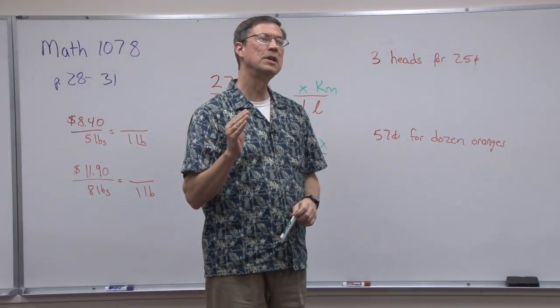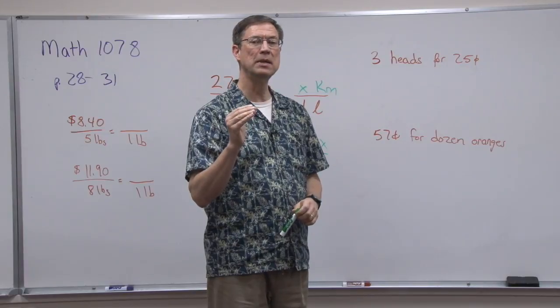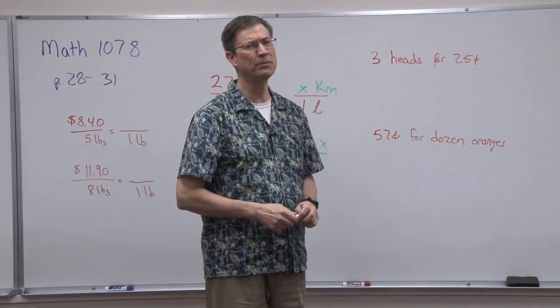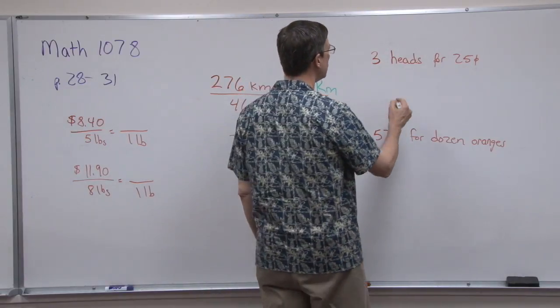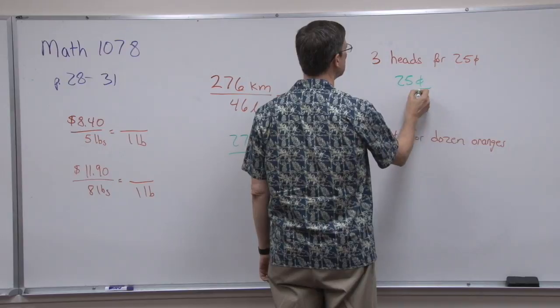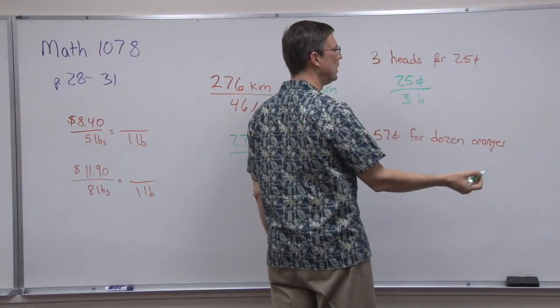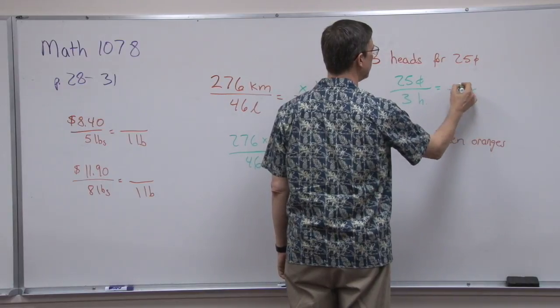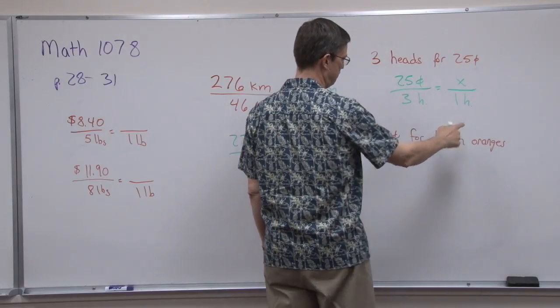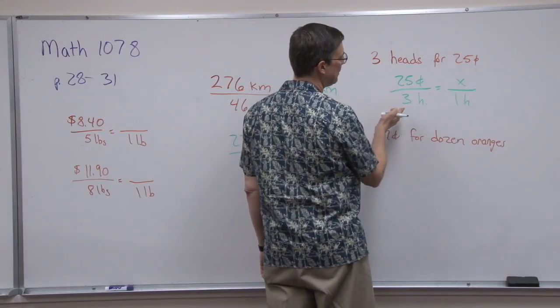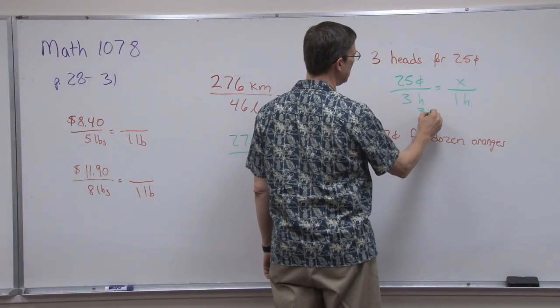The tip is that you always put the money on the top. That will make it easier if you just always set it up the same way. So I'm going to do 25 cents over 3 H for heads of lettuce, and I want to figure out what is the cost for 1. Now I'm going to multiply - this time I'm going to go this way and do the 3 times X equals 25 times 1.